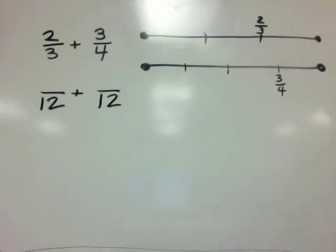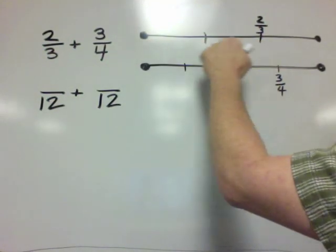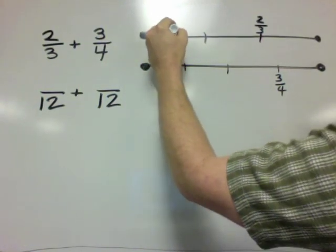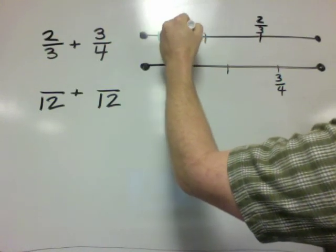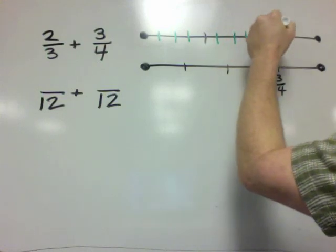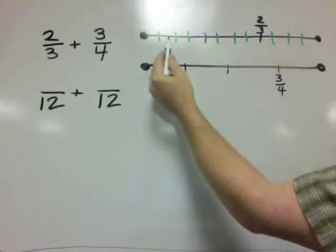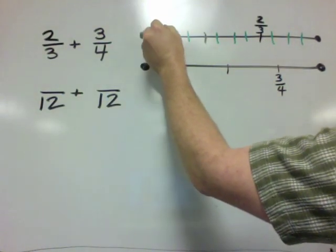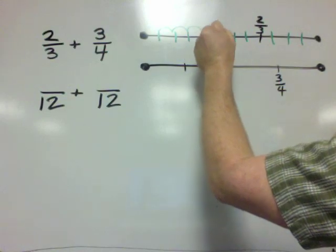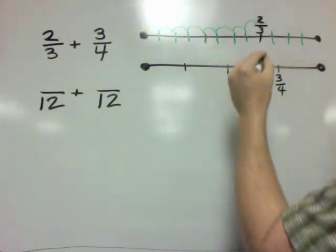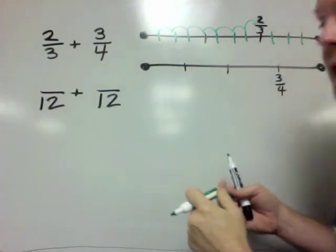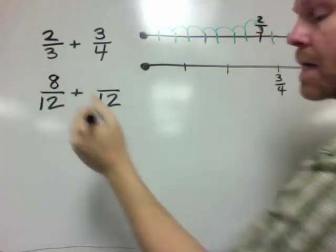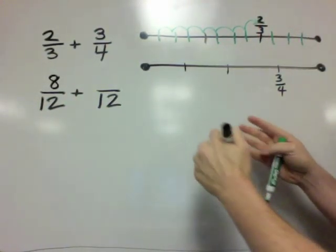What that means is we're going to take this fraction up here, and each of these intervals we're going to cut into four pieces. So instead of this being two-thirds, this now becomes eight-twelfths. So two-thirds becomes eight-twelfths.